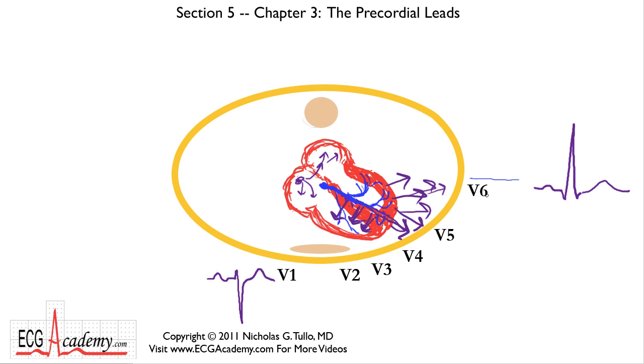Everything in between will generally be a steady progression from one to the other. In other words, the R wave will gradually increase in size until you get this big R wave. And the S wave will gradually diminish in size until you get hardly any S wave, if any, at all.